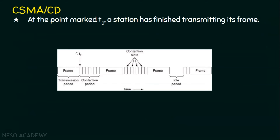At time T0, a station has finished transmitting its frame — the channel has now become free, and other stations will try to sense the channel and place their frames. The problem is, if two or more stations sense the channel at the same time and find it idle, they will start transmitting simultaneously, causing a collision. Before the next frame is sent, there will be a contention period — the minimum time a host must transmit to ensure no other host's packet is being transmitted.